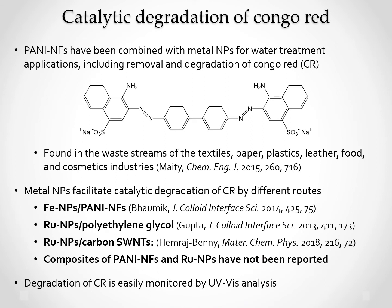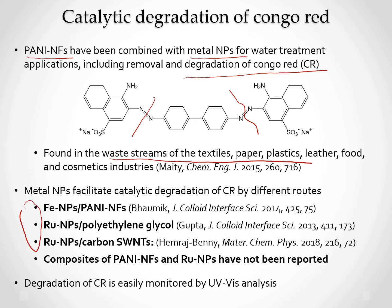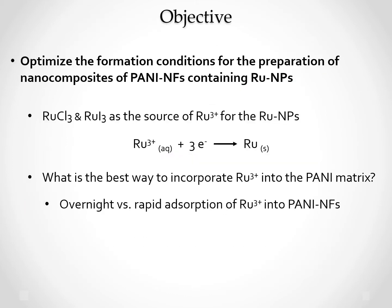Our objective is to combine PANI nanofibers with metal nanoparticles to degrade Congo Red by breaking its azo bonds. Congo Red is a pollutant found in the waste streams of several industries. Several studies have been done in the past; however, PANI nanofibers and ruthenium nanoparticles have never been used together. So the current objective of the research is to find the right conditions to form composites of PANI nanofibers containing ruthenium nanoparticles.